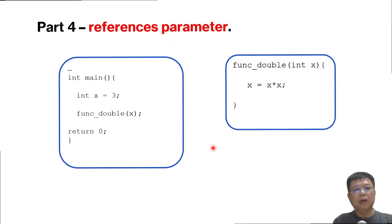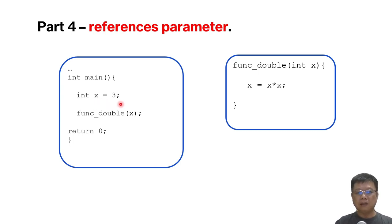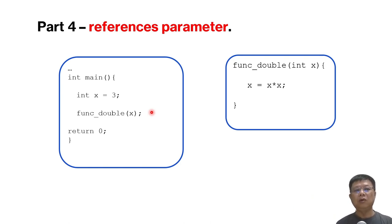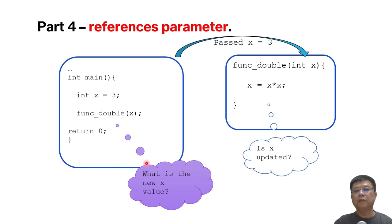In this section we will talk about reference parameters. Sometimes we want to update a variable in our main program from inside a function. Without reference parameters, even if you update a variable inside a function, when it passes back to the main function the value is not updated — it stays the same. When these complex situations happen, we use something called reference parameters. You add an ampersand (&) symbol in the function parameter declaration to indicate it is a reference parameter.